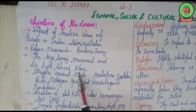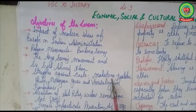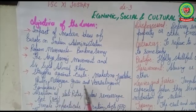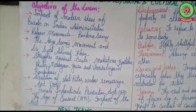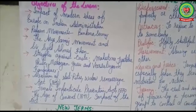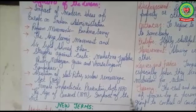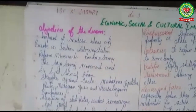We will also cover Syed Ahmed Khan's struggle against caste, discussing the contribution of Mahatma Jyotiba Phule, Narayan Guru, and Varisalingam Kandukuri, abolition of Sati, the Widow Remarriage Act 1856, the Female Infanticide Prevention Act 1870, the Age of Consent Bill 1891, and the impact of that bill.